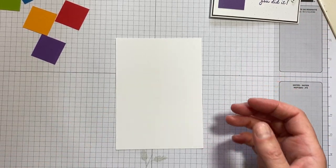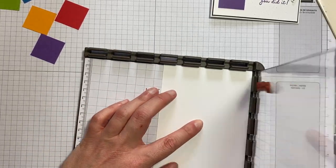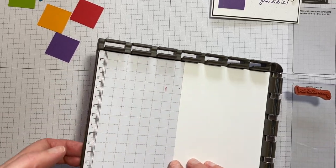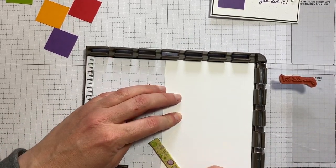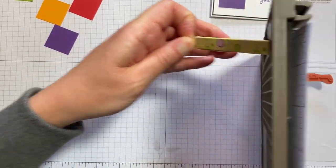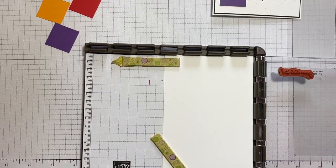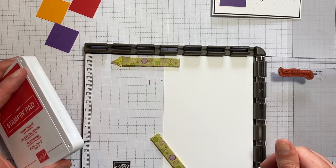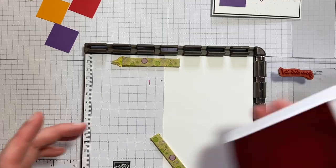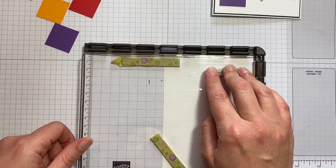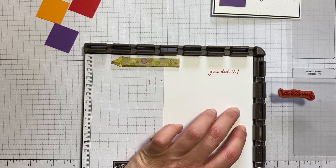I'm going to use the Stamparatus for stamping the sentiments. I'll just grab the magnets. And I'm going to clean the stamp in between each one because I'm using the hinge step technique but I'm going to do it in all of the different colours. Firstly, the Poppy Parade. Then I'm going to move it down one step.